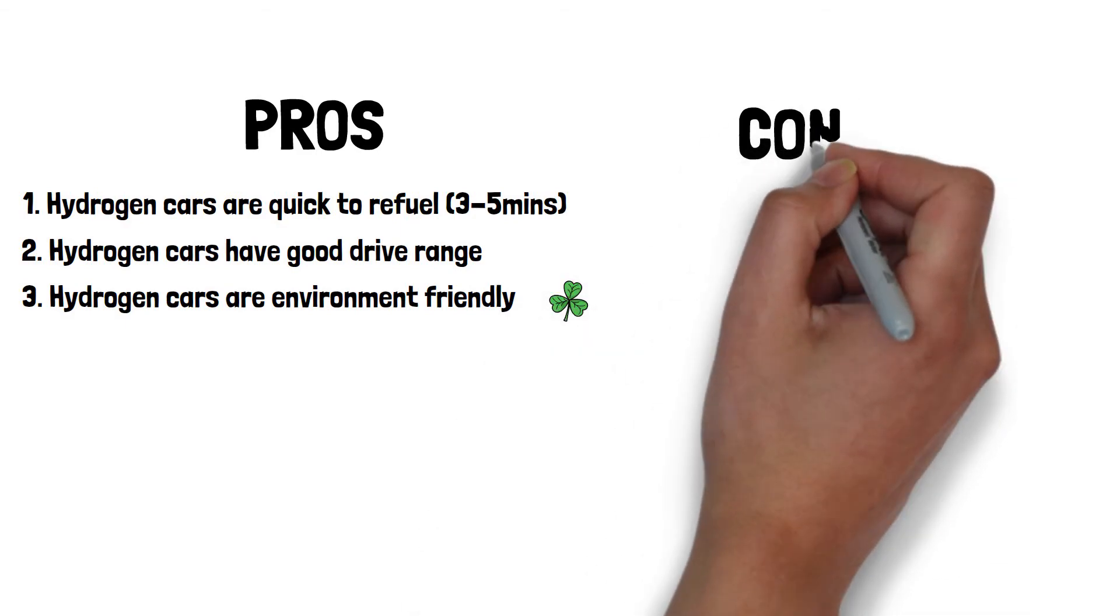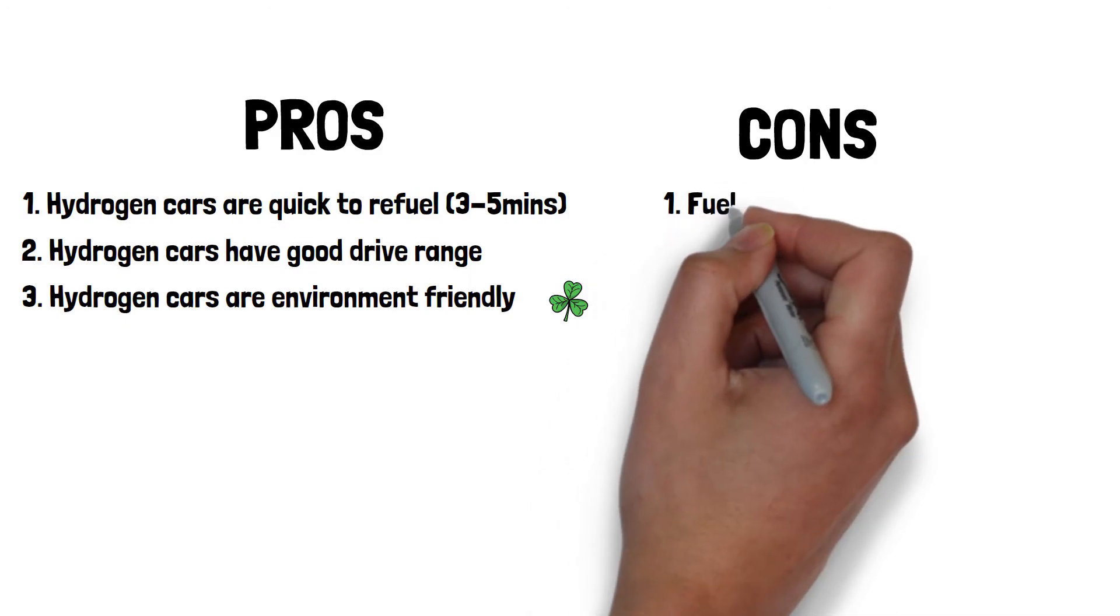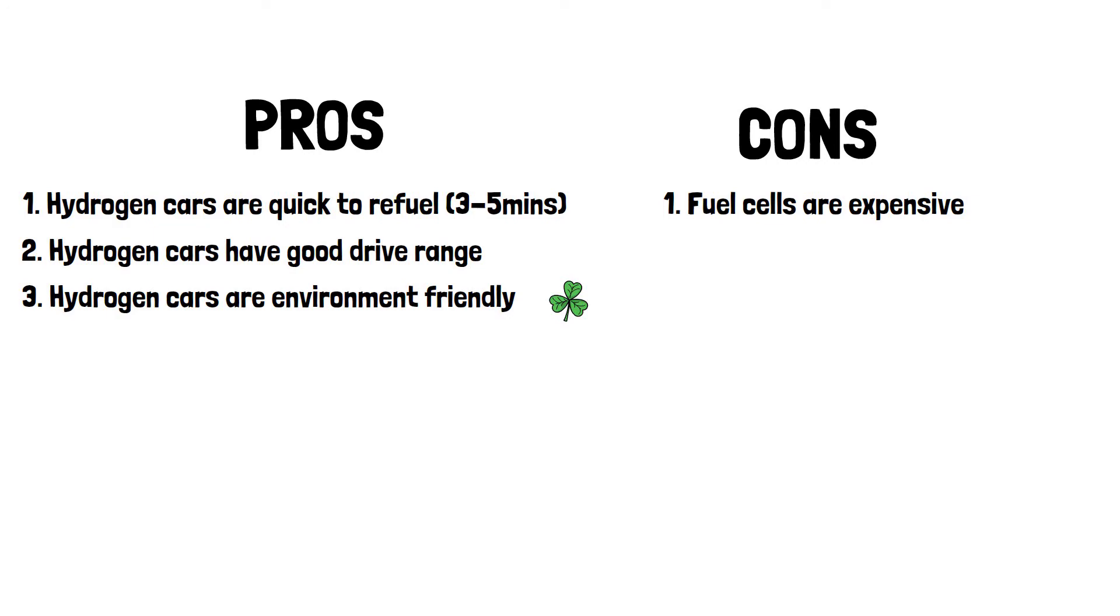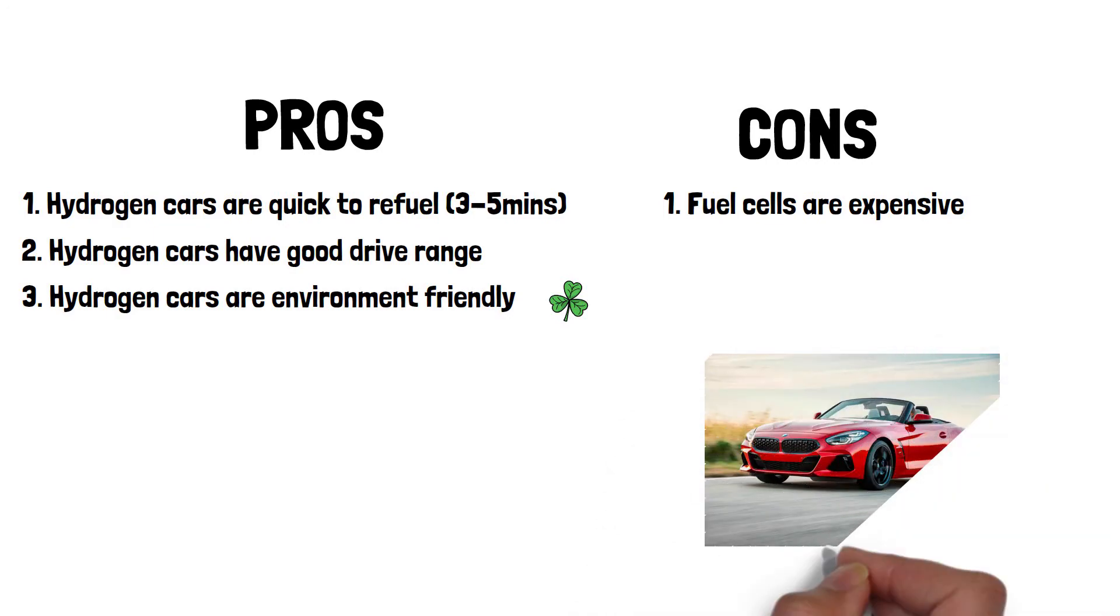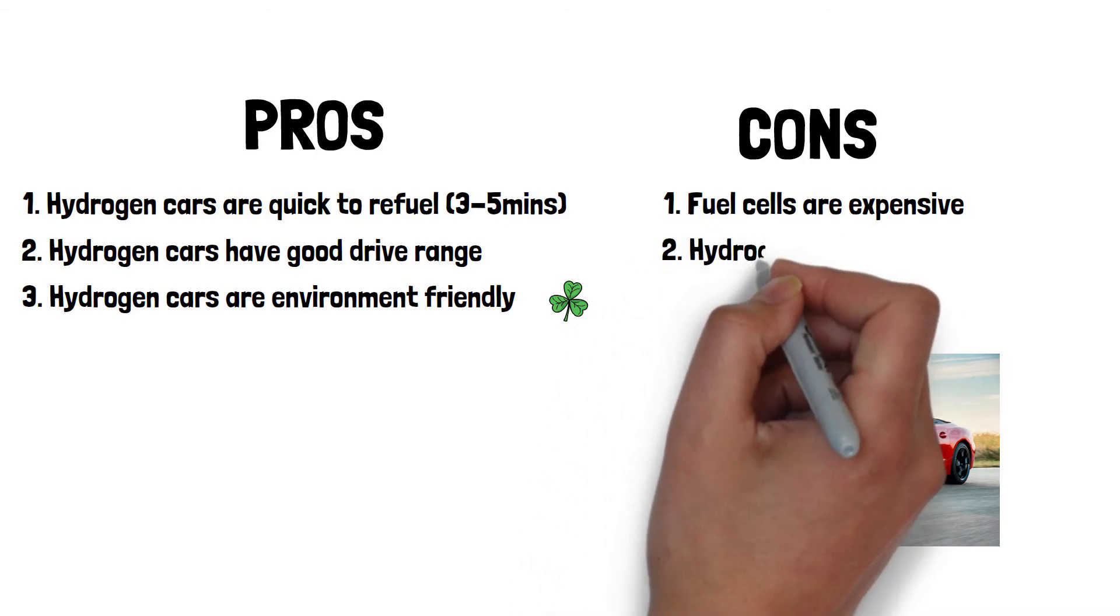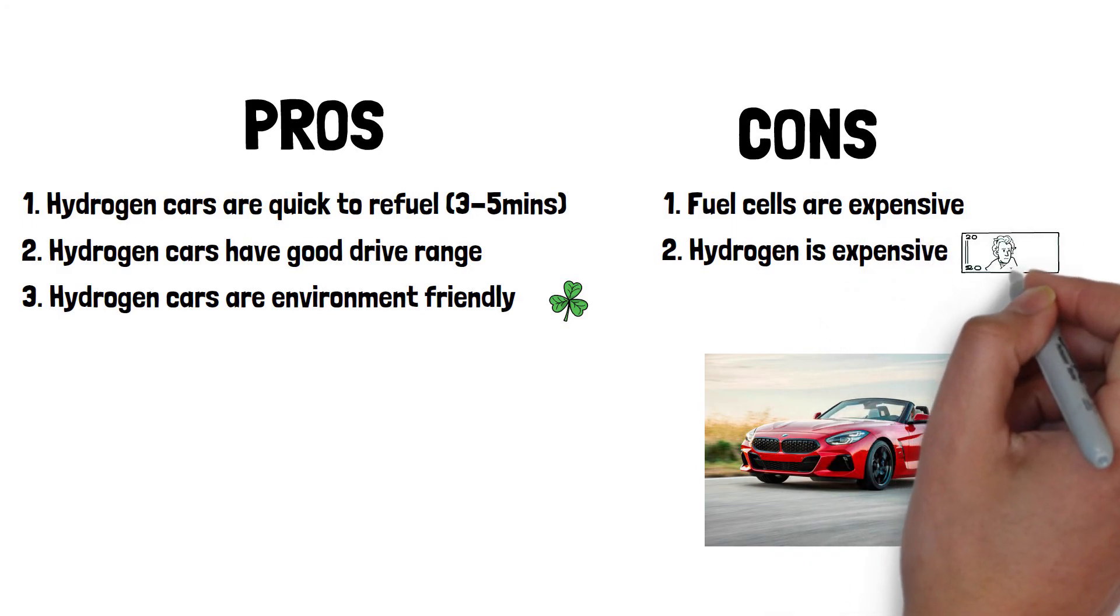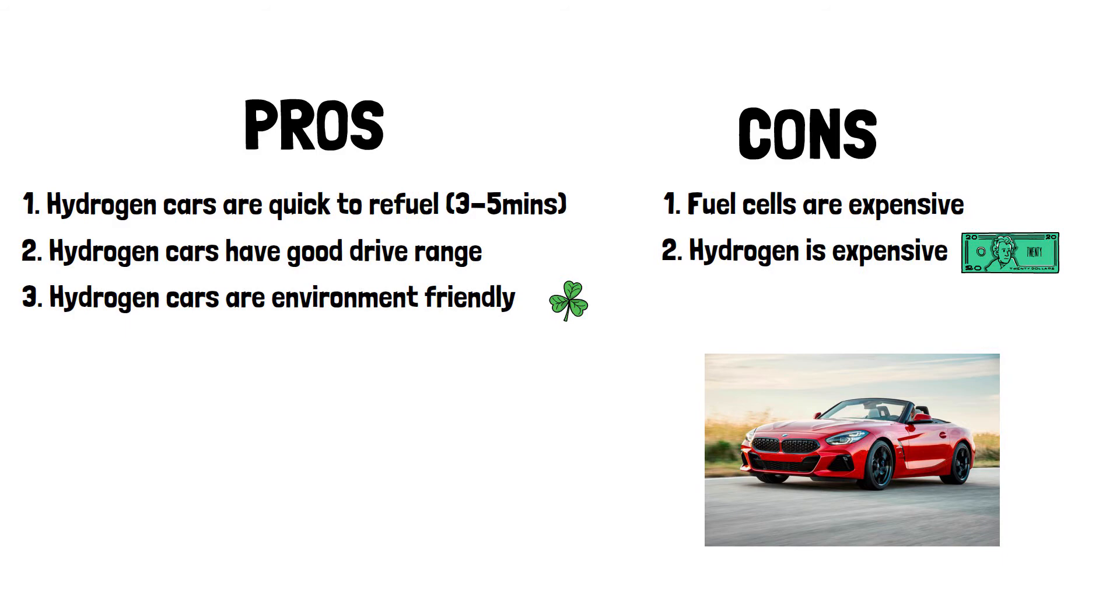Moving to the cons. Fuel cells are very expensive. The Toyota Mirai is about $50,000. For that price, would you rather own that or a BMW? Although California does offer tax and rebate incentives to lessen the cost. Number two, hydrogen is also very expensive. At an approximate cost of $16 per kilogram, it would take $90 to fill up the Mirai's 5.6 kilogram tank. It is worth mentioning that Toyota offers $15,000 or six years worth of complimentary fuel.